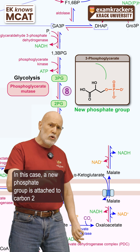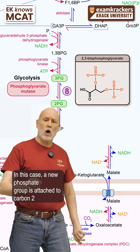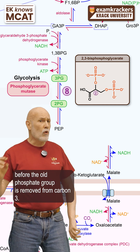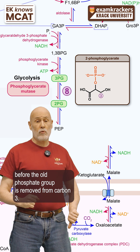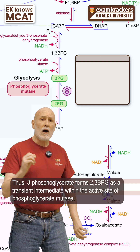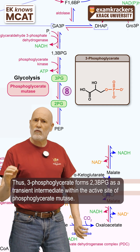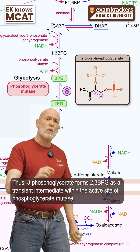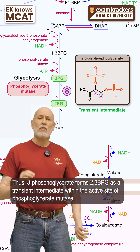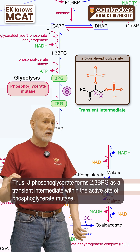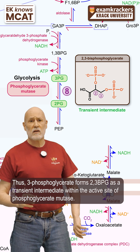In this case, a new phosphate group is attached to carbon 2 before the old phosphate group is removed from carbon 3. Thus, 3-phosphoglycerate forms 2,3-BPG as a transient intermediate within the active site of phosphoglycerate mutase.